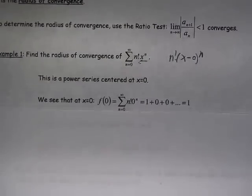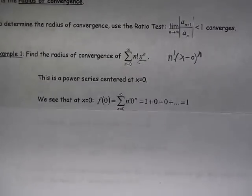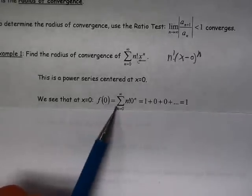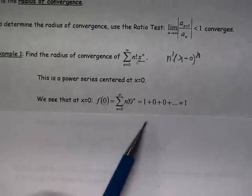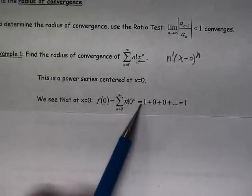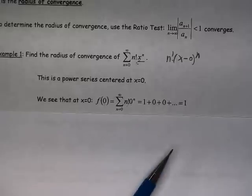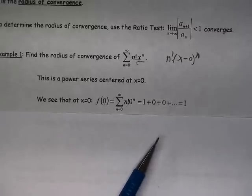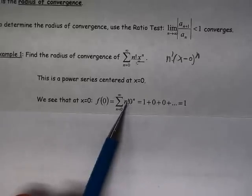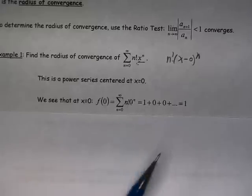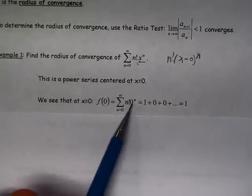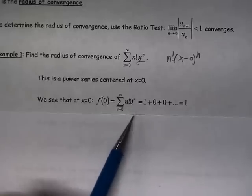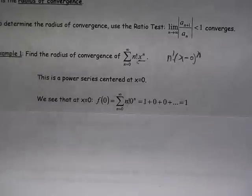And we can see that at that x equals 0, f of 0 would be this. It would be n factorial times 0 to the n, so 0 to the 0 gives us our 1. The 0 to the 0 factorial gives us a 1, so we get a 1 times 1 is 1. But everything else, now we have powers of 0, 0 to the first, 0 to the second, 0 to the third, 0 to the fourth. Those are all 0, so we get 1 for that.